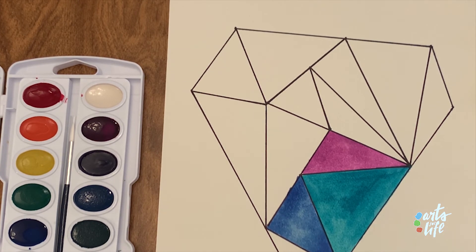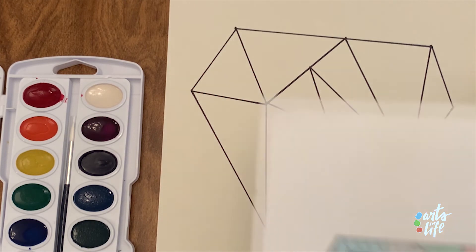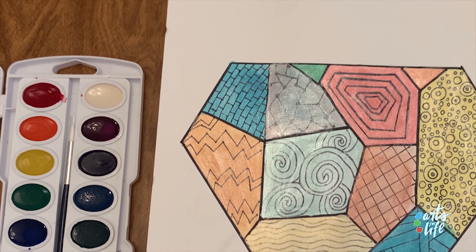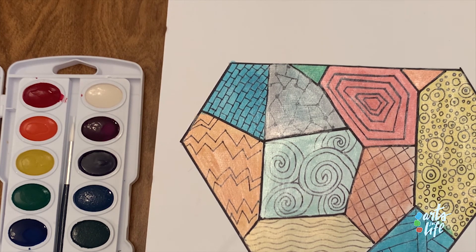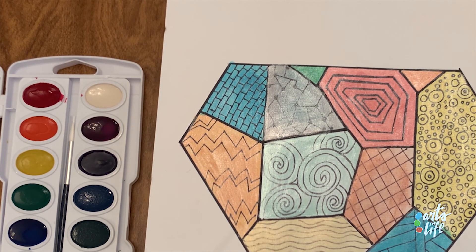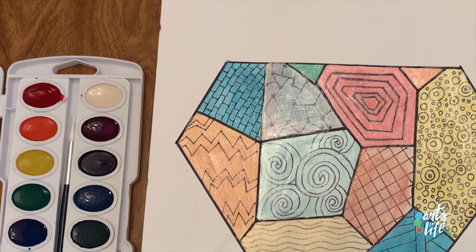But you could also take your black permanent marker after your paint is dry, and you could decorate and use different shapes and patterns inside each of the shapes colors to get something similar to this. So you can see there's different patterns and shapes and designs drawn on inside of each shape. So you could do something like that as well.